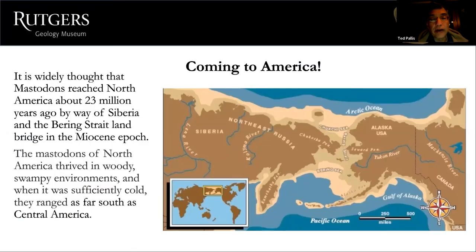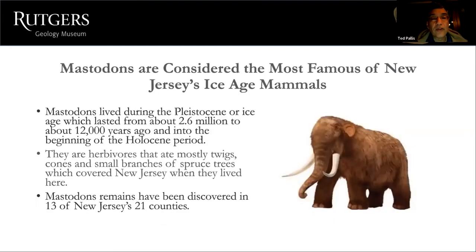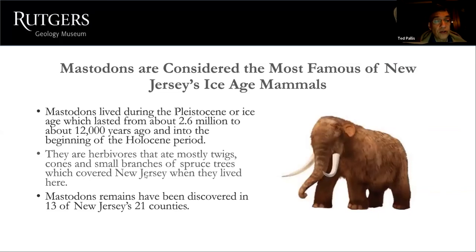Mastodons reached North America about 23 million years ago by way of Siberia and the Bering Strait land bridge during the Miocene epoch. They thrived in woody, swampy environments and ranged as far south as Central America and Florida during colder periods of the ice age. American mastodons were among the largest living land animals during the Ice Age in New Jersey. They are herbivores, eating mostly twigs, cones, and branches of spruce trees, which covered New Jersey when they lived here. Mastodon remains have been discovered in 13 of New Jersey's 21 counties.